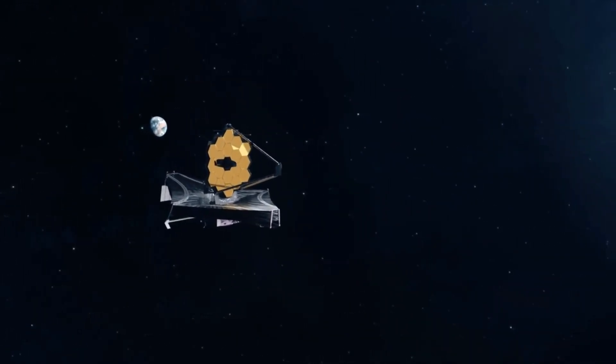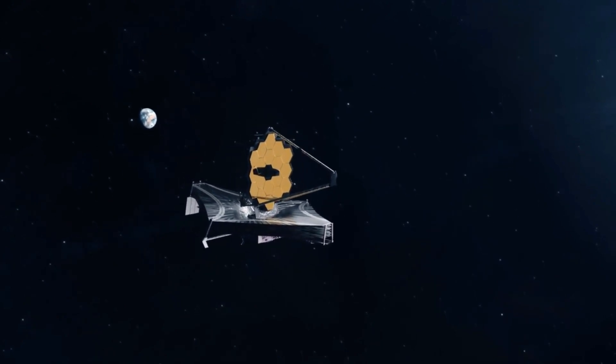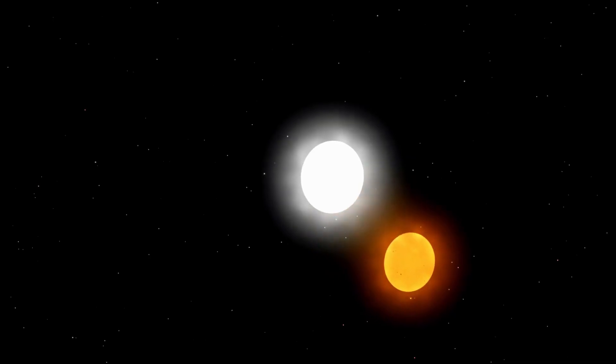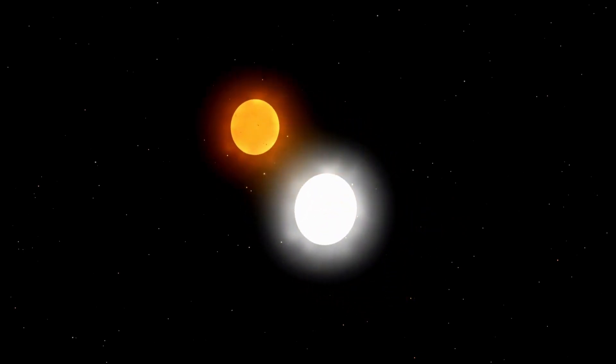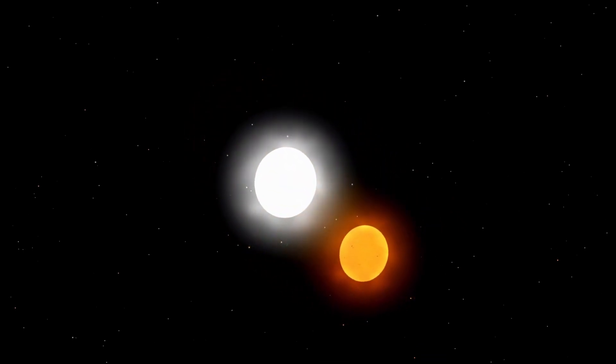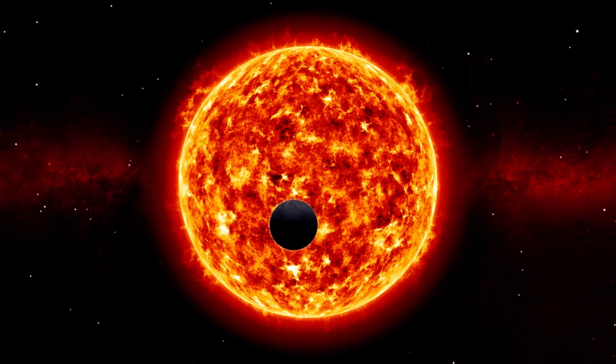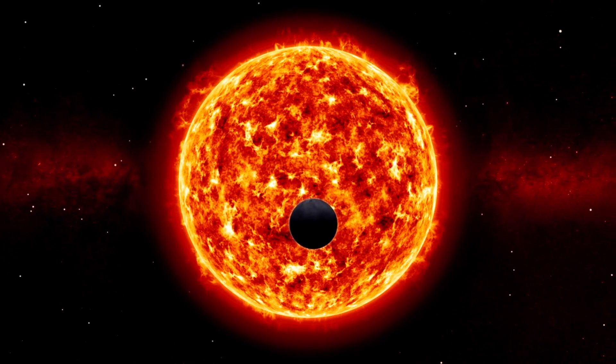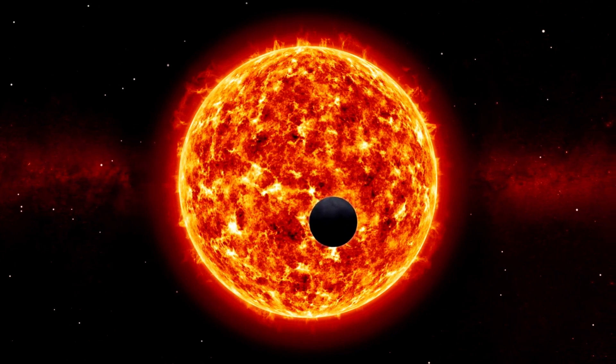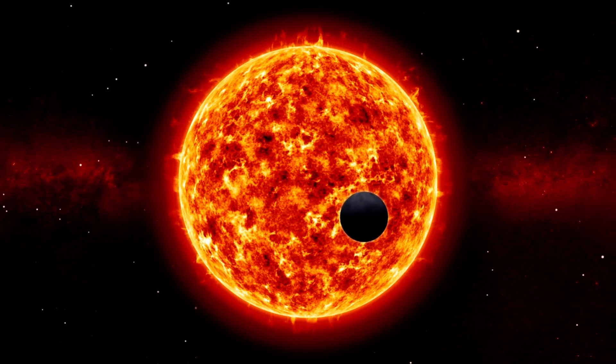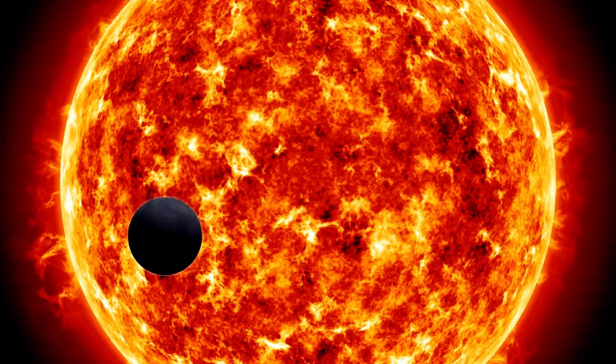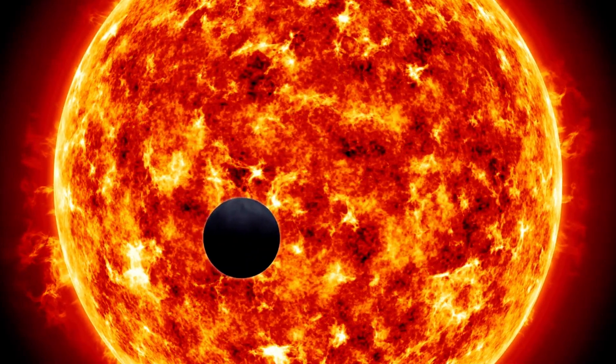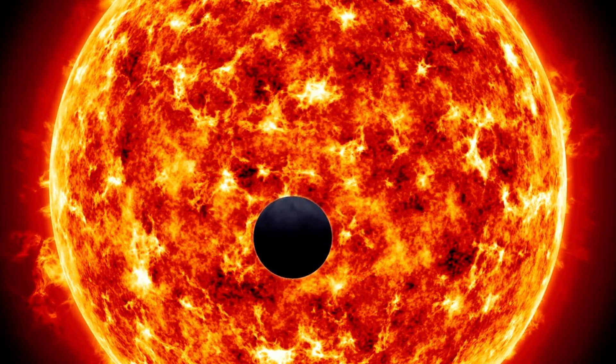Our cosmic story with K2-18b began back in 2015 when NASA's Kepler Space Telescope spotted it. Kepler captures these epic moments when a planet passes in front of its star from our perspective. This celestial photobomb causes a tiny dip in the star's brightness. And astronomers can work their magic to figure out stuff like the planet's size and how it moves around its star. By the way, it's got this 33-day orbit around its star, which keeps it cozy in that habitable zone.